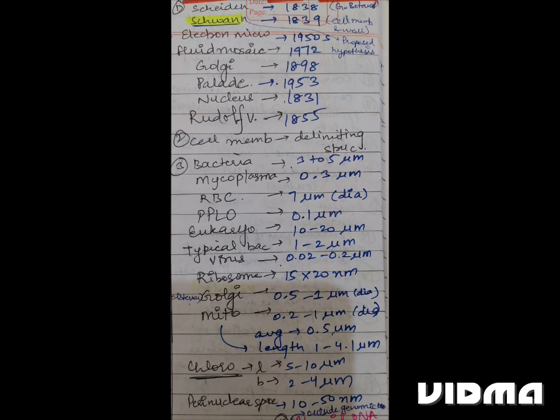Virus 0.02-0.2 micrometer, Ribosome 15-20 nanometer, Golgi Apparatus 0.5-1 micrometer in diameter.